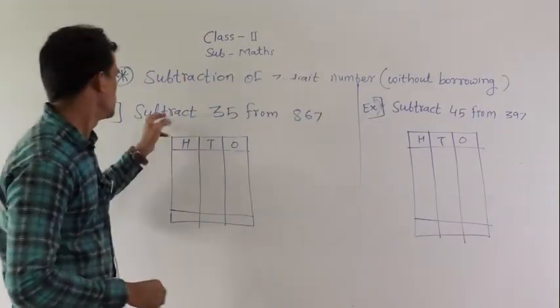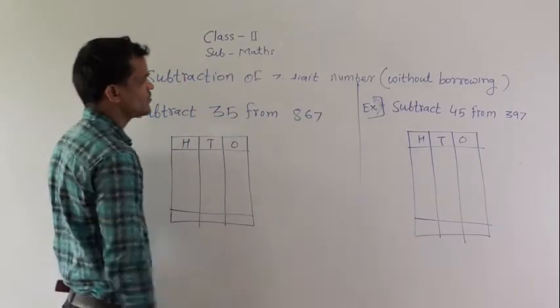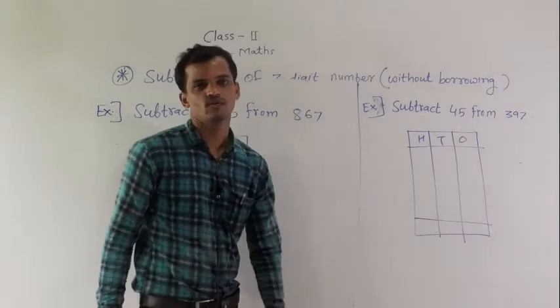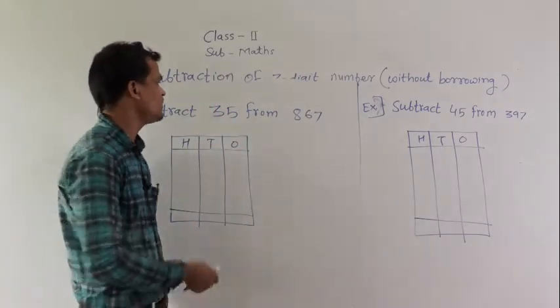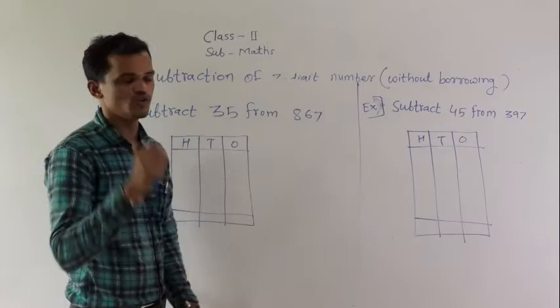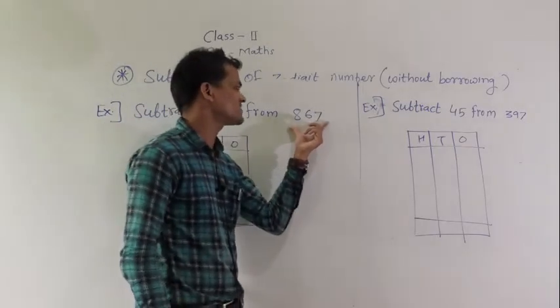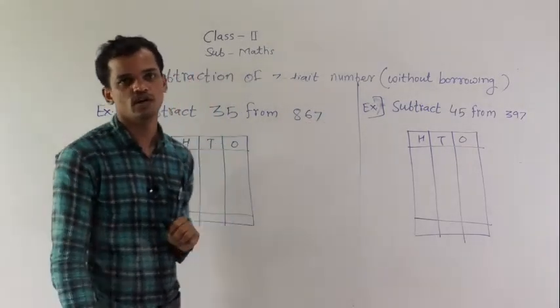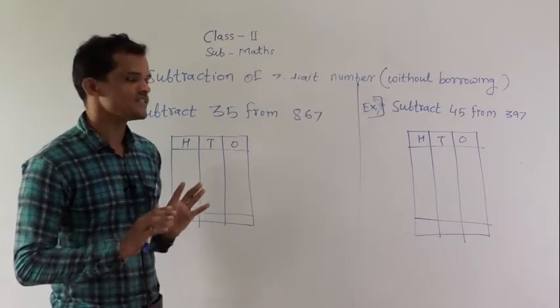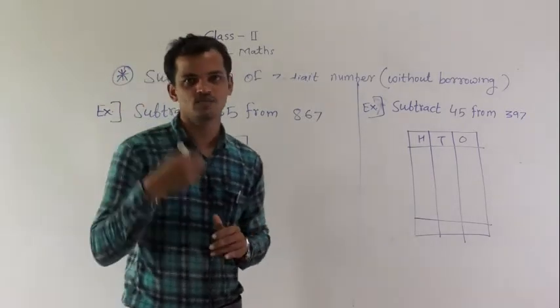Next example: subtract 35 from 867. Now, just observe 35 is a 2-digit number. 867 is a 3-digit number. So, first write the bigger number upside.